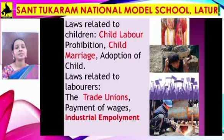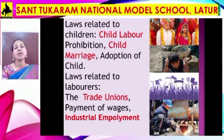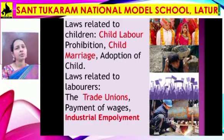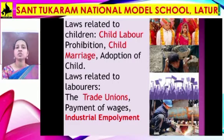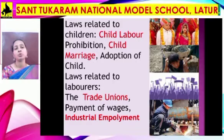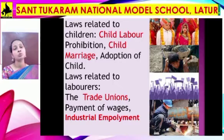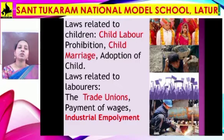When we think about laws related to children, these include the Child Labor Prohibition Act, the Child Marriage Act, and adoption of children. Because of the Child Labor Prohibition Act, child labor is no longer commonly found. Regarding child marriage, no one now dares to ask a girl to marry before the age of 18 or a boy before the age of 21. For adoption as well, some rules exist, and only parents who fulfill those rules can adopt a child.